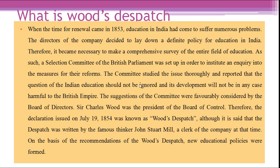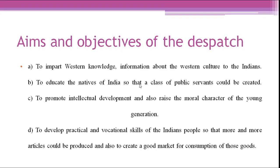Charles Wood was the President of the Board of Control. Therefore the declaration was issued on July 19, 1854, and it is known as Wood's Dispatch. This dispatch was written by the famous thinker John Stuart Mill, a clerk of the company at that time.